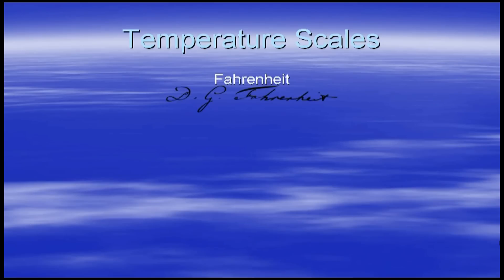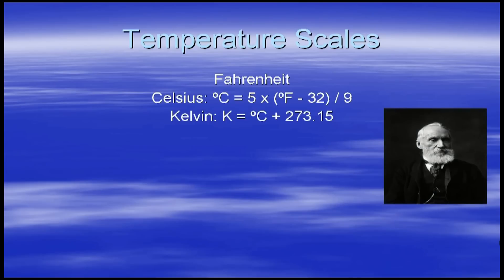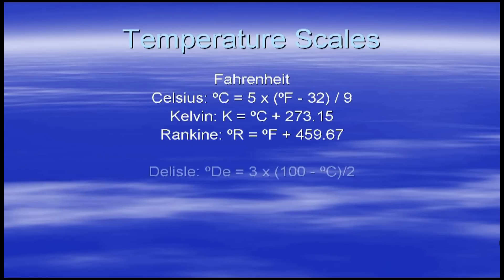Let's start with Fahrenheit. This temperature scale was proposed in the early 1700s by the Dutch-German-Polish physicist Daniel Gabriel Fahrenheit. Swedish astronomer Anders Celsius developed a temperature scale on which water boiled at zero and froze at 100; it was reversed by Carl Linnaeus but is named after Celsius. The Kelvin scale is named after the Belfast-born engineer and physicist William Thomson, Lord Kelvin, who wrote of the need for an absolute thermometric scale. The Rankine scale is named after the Scottish engineer and physicist William John Macquorn Rankine.